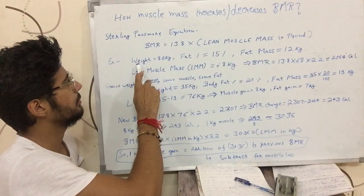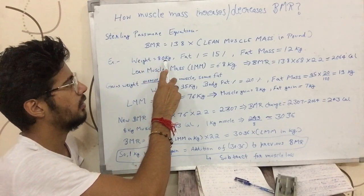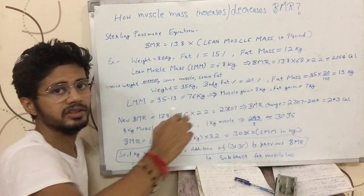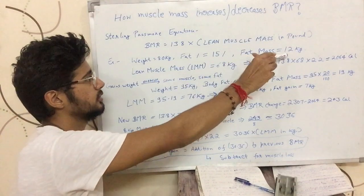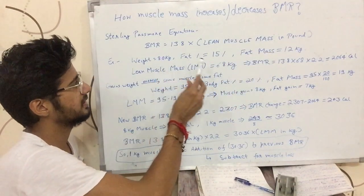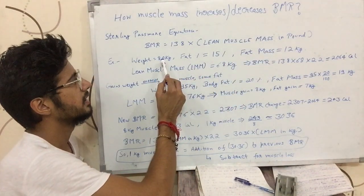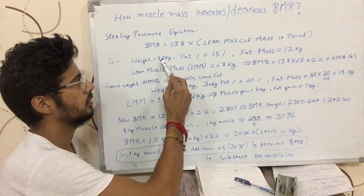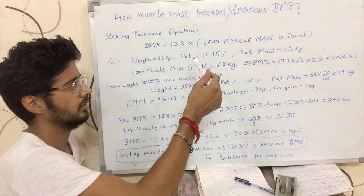We will take an example of a person who has a weight of 80 kgs, fat percentage of 15%, and fat mass of 12 kgs. How did we come with the fat mass of 12 kgs? 15% of 80 is 12. He had a body fat percentage of 15%, so 8 plus 4 equals 12.